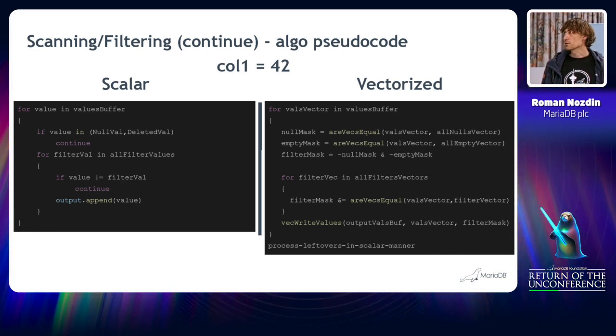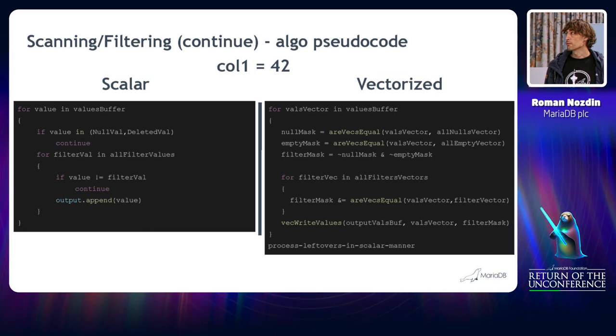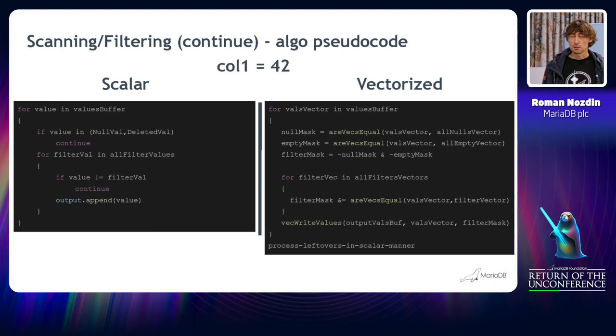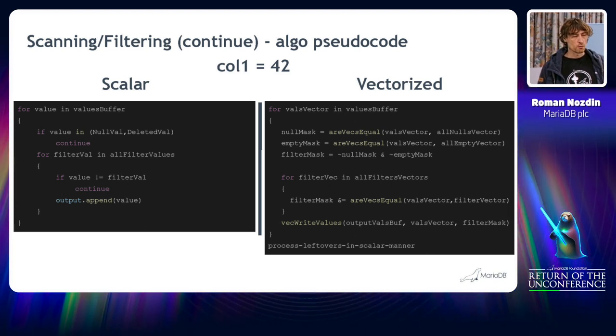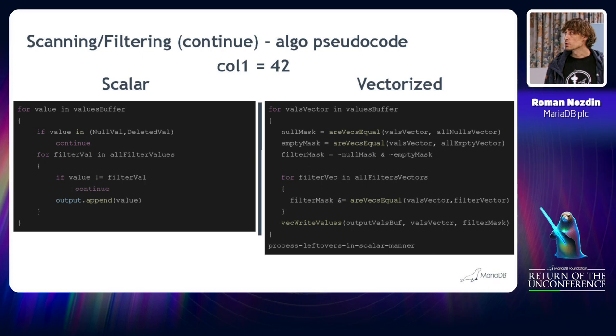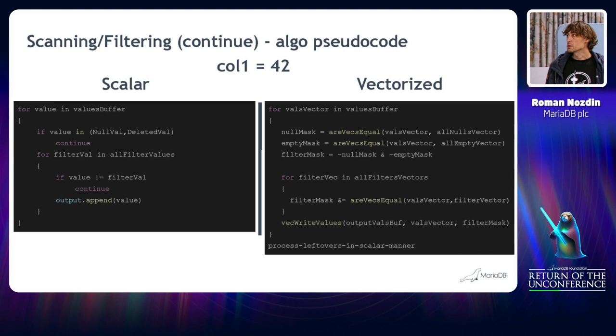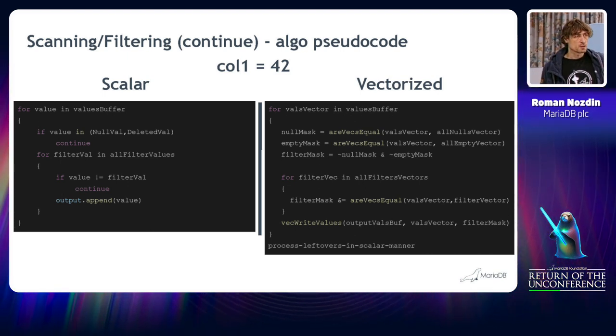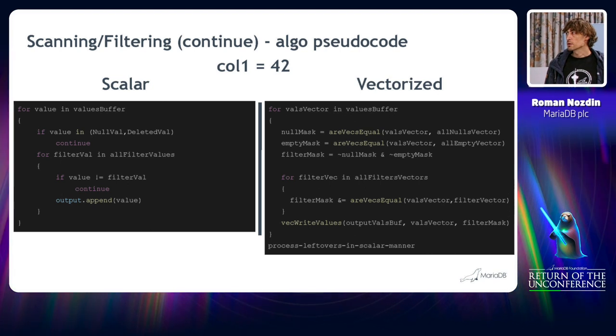The vectorized execution is a bit more complicated. It's a bit more involved because we compare the vectors. Let's say we are working with an integer column. So integer column has four values in SSE 4.2. So we try to compare four values at a time. And as a result, we have a null mask. And the null mask is basically the bits that are set to 1 if the equality is true. And they are zeros if they're not.